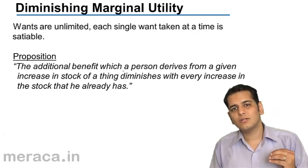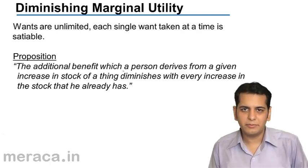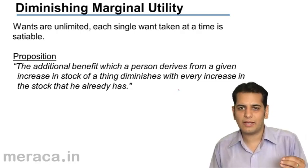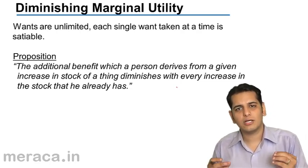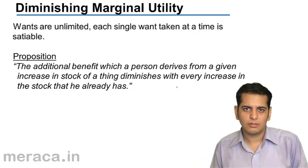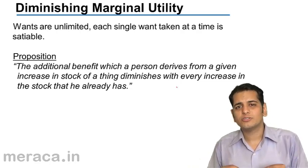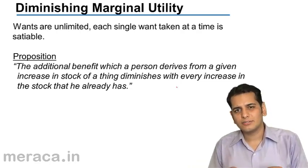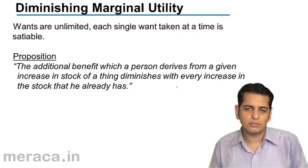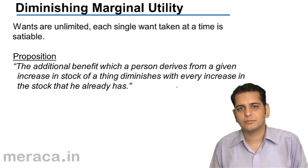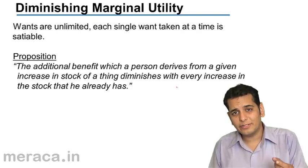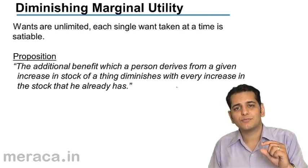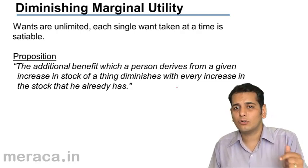Before understanding the law of diminishing marginal utility, we need to understand the fact that human wants are unlimited. When human wants are unlimited, we cannot satisfy all the wants that we have. But if we take one single want at a time, we can satisfy each of these wants.